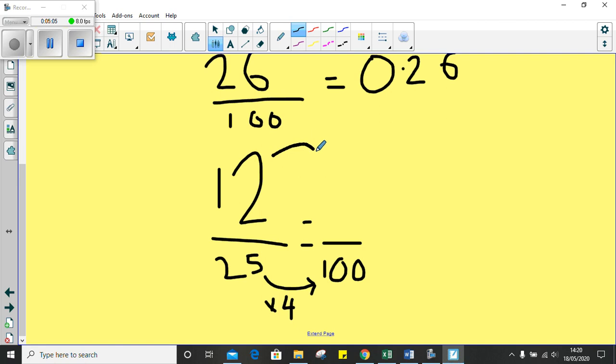So I know from previously, whatever I do to the bottom, I must do to the top. So twelve multiplied by four is equal to forty-eight. Now, very similar to twenty-six hundredths, I know that it's equal to zero point four eight.